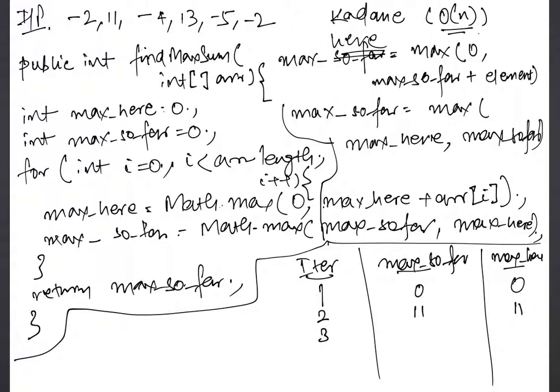In the third iteration we get minus 4, so max_here becomes 7, max_so_far is still 11. In the fourth iteration, 13, so max_here becomes 20, max_so_far becomes 20. In the fifth iteration we get minus 5, max_here becomes 15, max_so_far is still 20. In the last iteration, 6th iteration, this becomes 13 and this is still at 20. And as a result we get 20, which is the maximum that you can get.